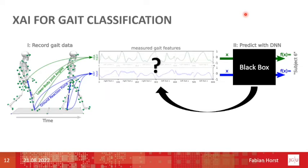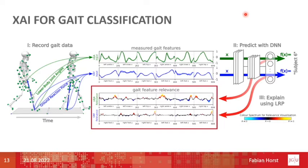Similar to the initial example, we don't know why the prediction was made by the model. To tackle this problem, we used a well-known explainable AI method called layer-wise relevance propagation and adapted it for this one-dimensional input data. For each value of the input vector, layer-wise relevance propagation determines a relevance score for the model's prediction. In our example, we get a color coding where yellow and red highlight the most relevant input values for the prediction of subject number six.